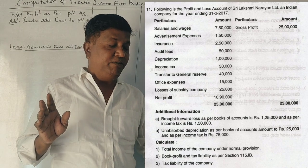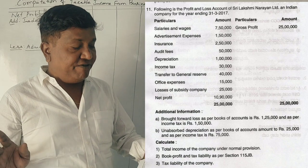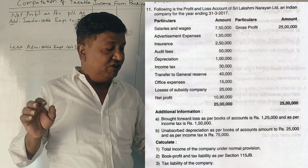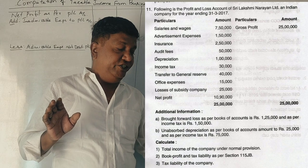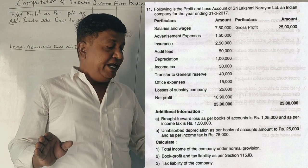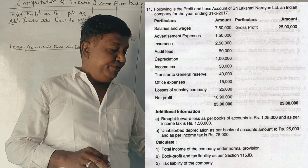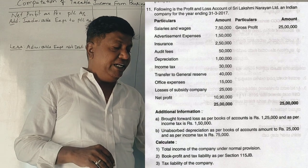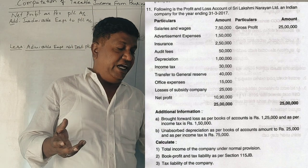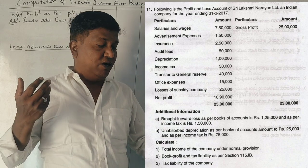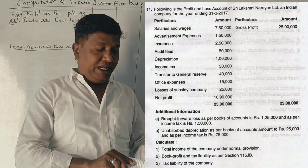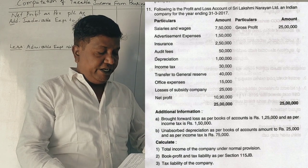Brought forward losses as per books of account is 1,25,000 and as per income tax is 1,50,000. Unabsorbed depreciation as per books of accounts is 25,000 and as per income tax is 75,000. We need to compute income under normal tax provisions, book profit, tax liability as per Section 115JB, and total tax liability of the company.